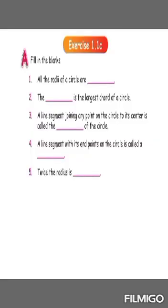Let us see the question answers. Fill in the blanks. First question: all the radii of a circle are ___. Second: the ___ is the longest chord of a circle. Third: a line segment joining any point on the circle to its center is called as the ___ of the circle. Fourth: a line segment with its endpoints on the circle is called as a ___. Fifth: twice the radius is ___.